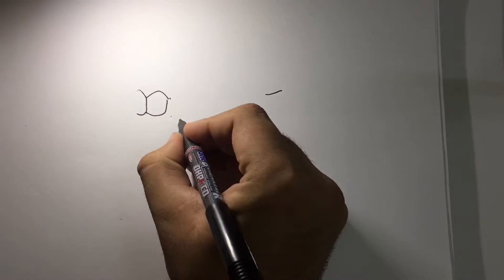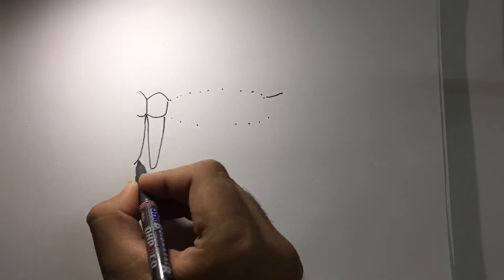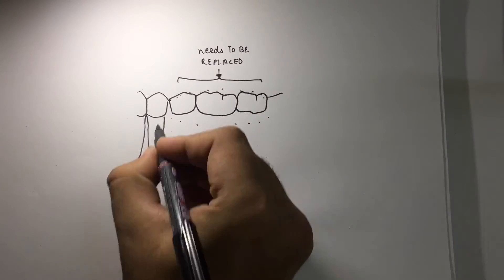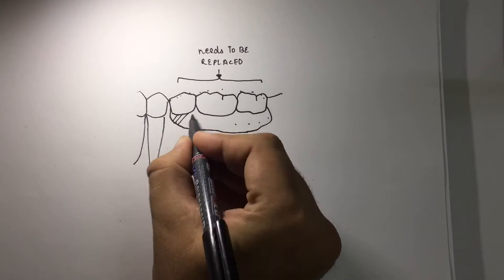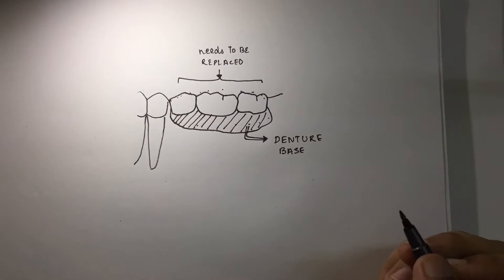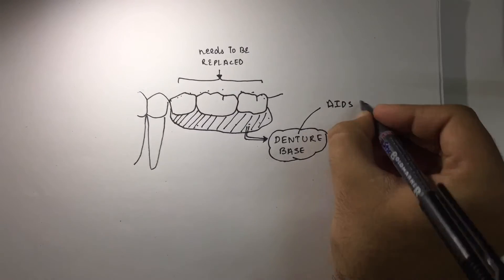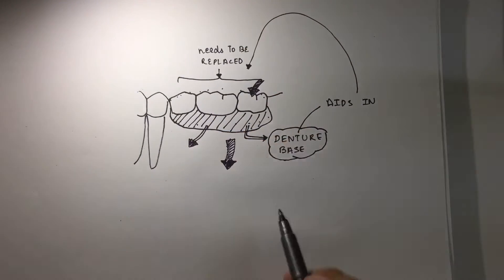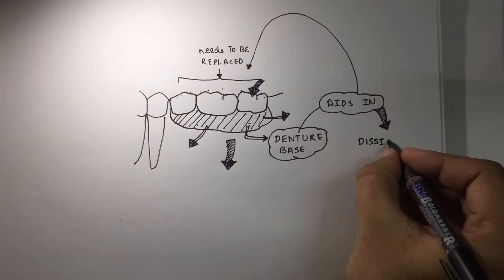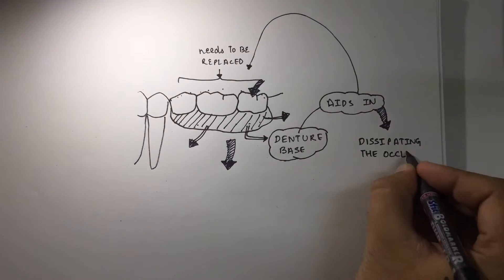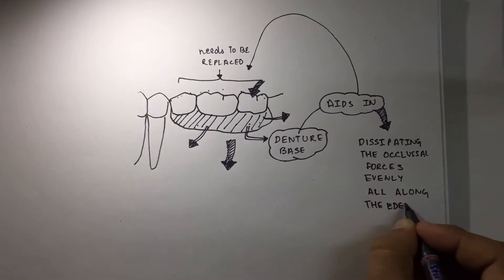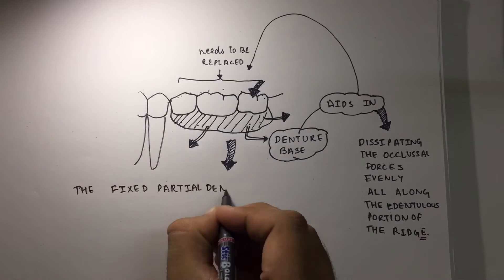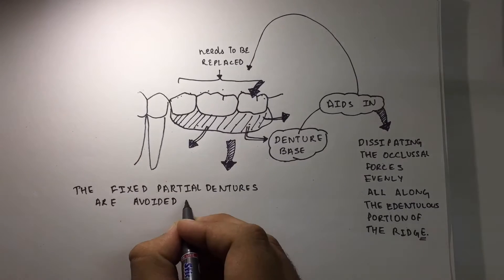In this case, the removable partial denture is preferred because the denture base aids in evenly distributing the occlusal forces along the edentulous portions of the ridge. Fixed partial dentures are avoided in cases with long span edentulous arches.